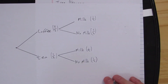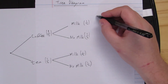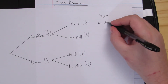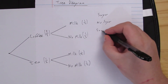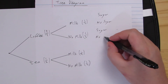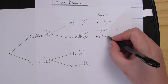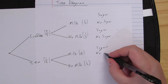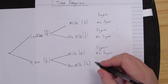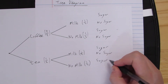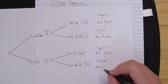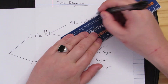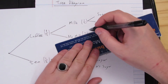Finally, I can choose to have sugar or no sugar. So my final branches are sugar or no sugar for each of the previous options — sugar or no sugar, sugar or no sugar, sugar or no sugar. Because these are all equally likely, it's going to be a half for each of them.